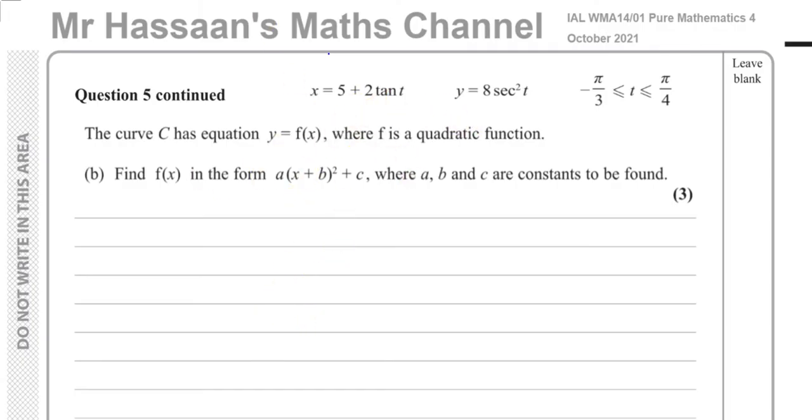So the first thing I'm going to do is I'm going to take the x and I'm going to rewrite it so that I make tan t the subject. That's like one of the things that will help. So if I do that, I'll have basically x minus 5 divided by 2 is equal to tan t. That's the first step that I'm going to take.